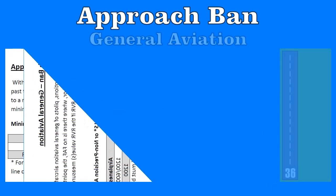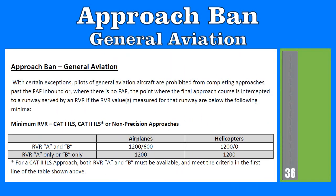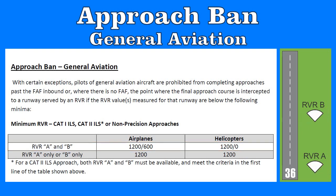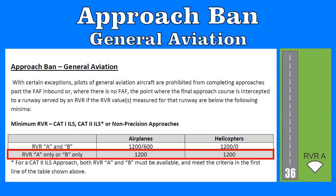So let's start with the simplest rule set — General Aviation. For non-precision and CAT-1 ILSs, the approach ban applies if the reported weather falls below the minima shown here. For a runway with RVR Alpha and Bravo available, RVR Alpha must be at or above 1200, and RVR Bravo must be at or above 600, or zero if you're a helicopter. If only a single RVR value is available for a runway, either RVR Alpha or Bravo, it must be 1200.